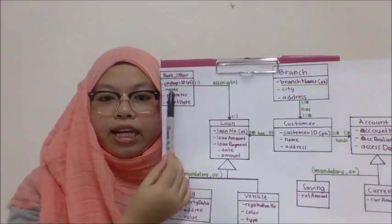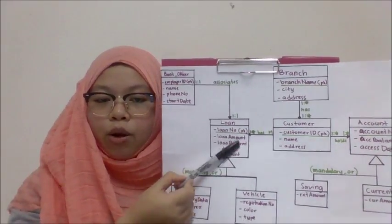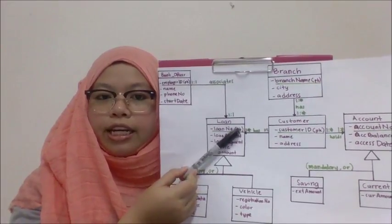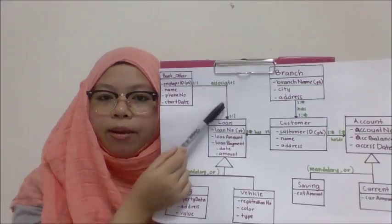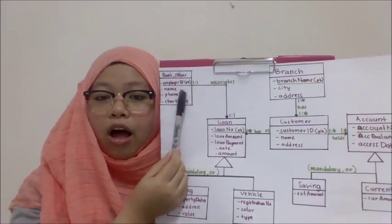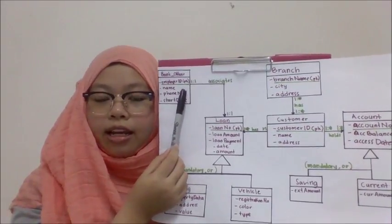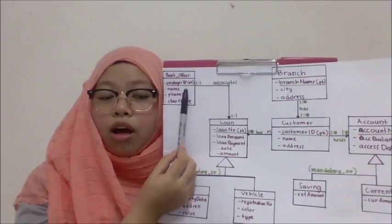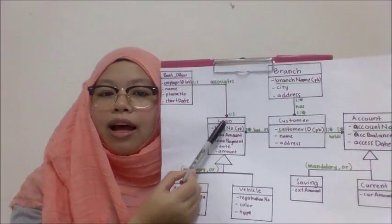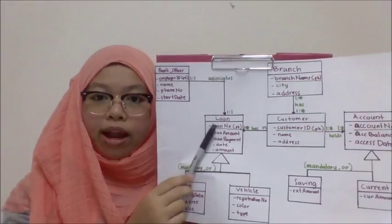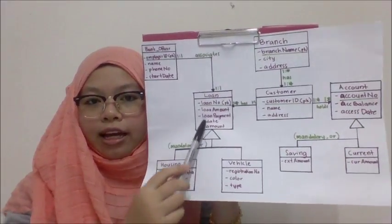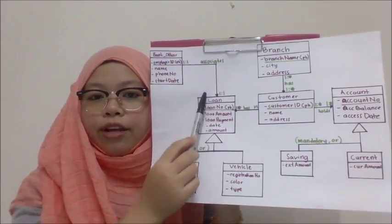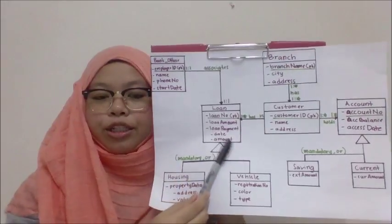The relationship between the loan entity and the bank officer entity: a loan can be associated with one and only one bank officer, also known as the loan officer. The bank officer can also be associated with only one loan. So the relationship between the bank officer and the loan entity is one-to-one.